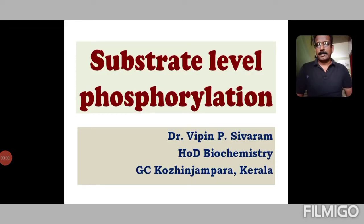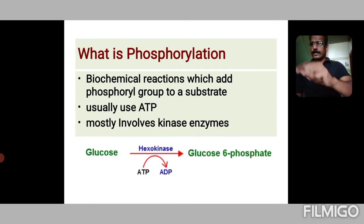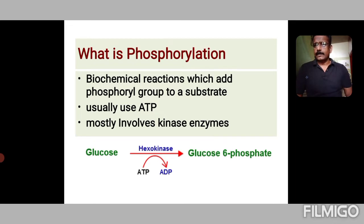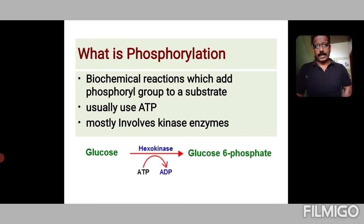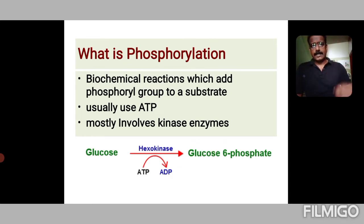Welcome back to WIPS Biochemistry. We meet again to discuss substrate level phosphorylation. Before we discuss substrate level phosphorylation, let us see what a phosphorylation reaction is. In chemistry or biochemistry, phosphorylation reactions are reactions which add a phosphoryl group to a substrate. Usually the phosphoryl group comes from a substrate, and more usually from ATP itself, and when it involves ATP it mostly involves the kinase enzyme also.